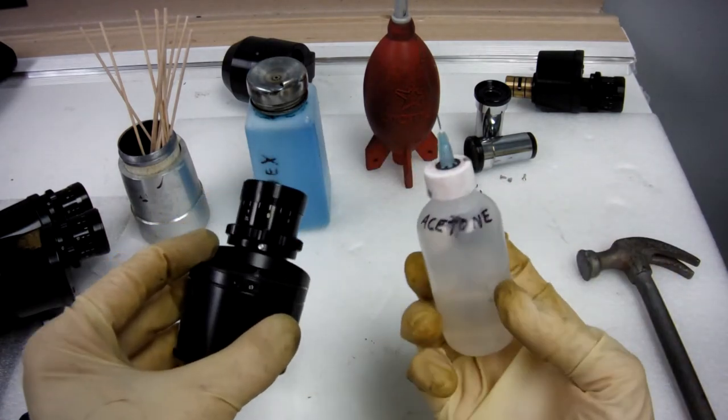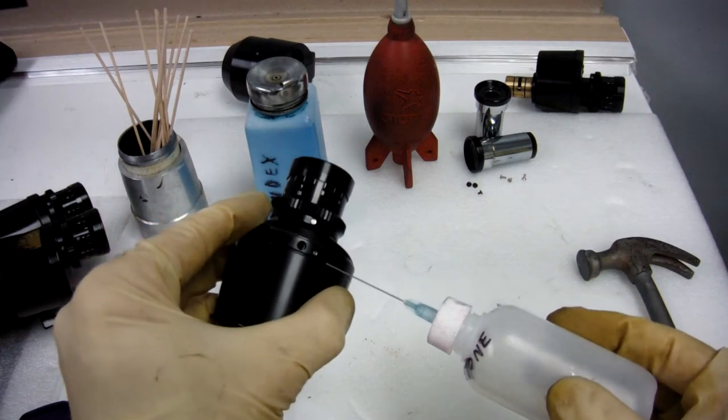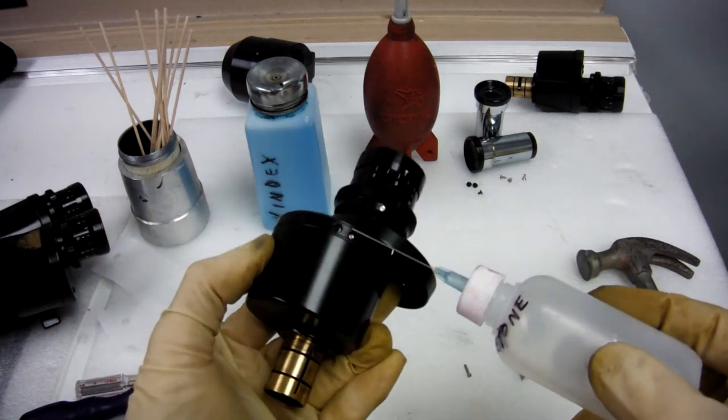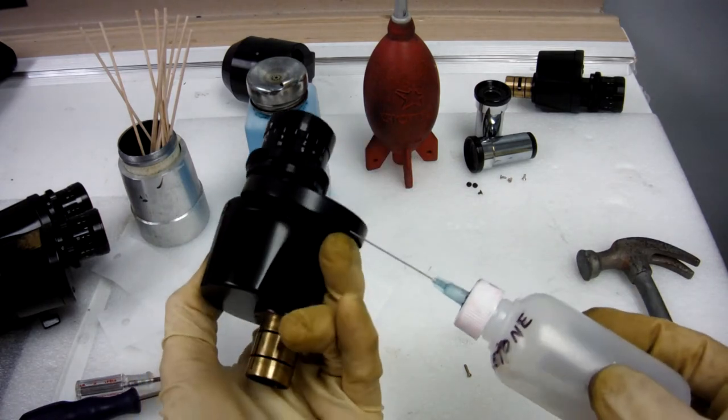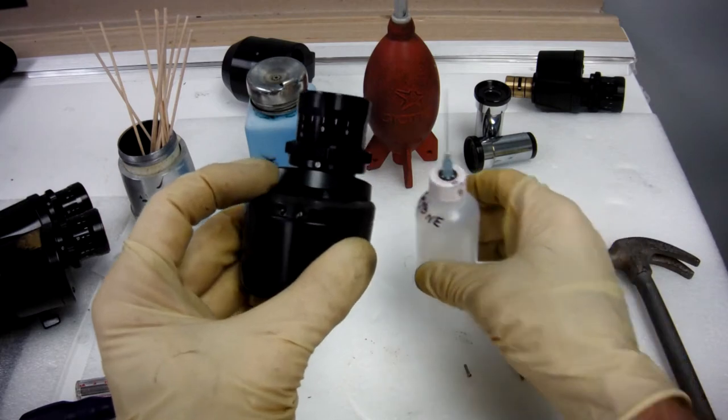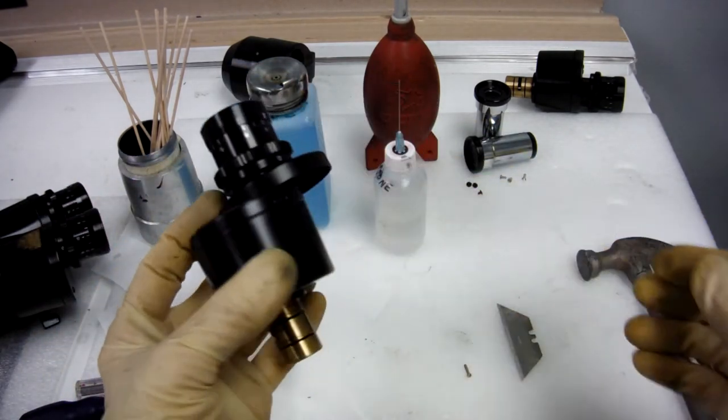You can try putting a little acetone in all the places where there's a lock screw. You can try to loosen the Loctite. Still doesn't work.